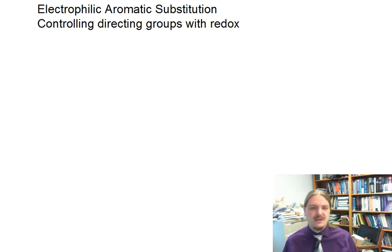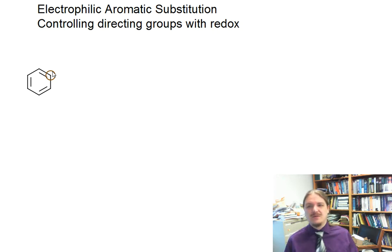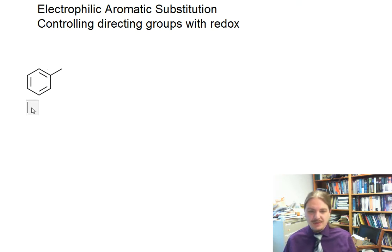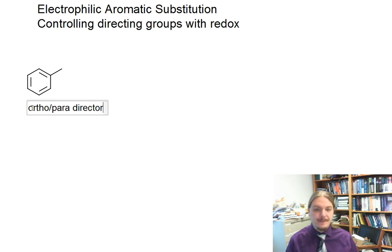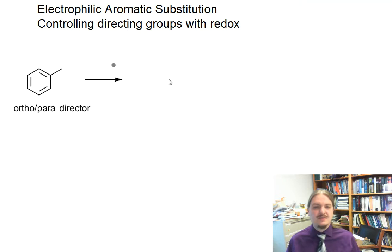The first of those concepts is controlling the directing groups with redox reactions. One of the things that's important to note is that you don't have control over the directing ability of a specific group. For example, the methyl group in toluene is an ortho-para director, but you do have the ability to convert that functional group into another functional group that has different directing behavior.